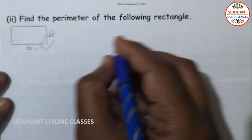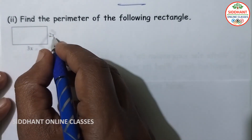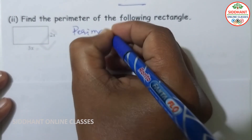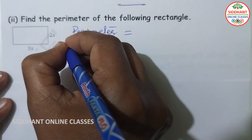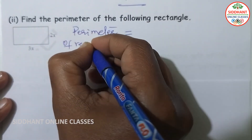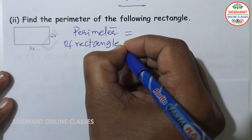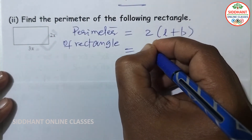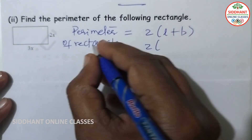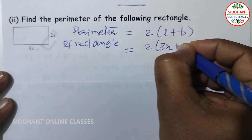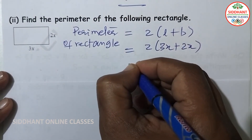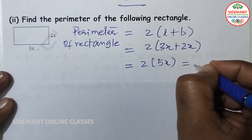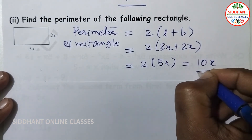Second part: find the perimeter of the rectangle. One side is 2X and the other is 3X. The perimeter of a rectangle is 2 into (L plus B), so 2 into (3X plus 2X) equals 2 into 5X, which gives us 10X.